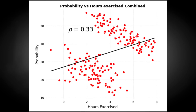Now let's look at an example for continuous data. On the x-axis we have hours exercised in a week, and on the y-axis we have probability of getting some kind of disease. When we plot the scatterplot with a line of best fit, there's a moderate positive correlation of 0.33. So as hours exercised goes up, risk of getting this disease also appears to go up — which would mean I can cancel my gym membership, right? Well, no.